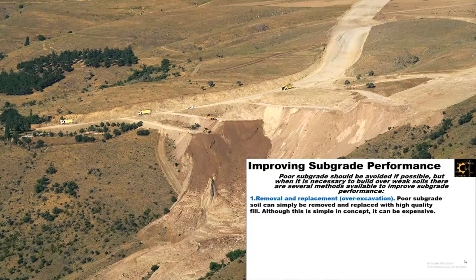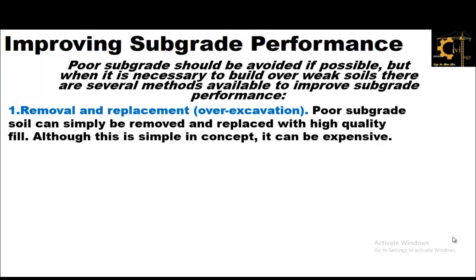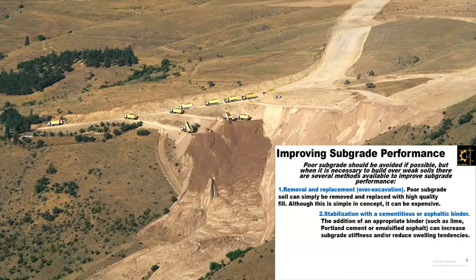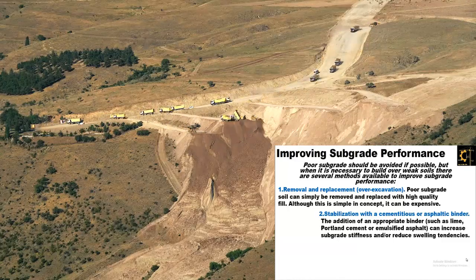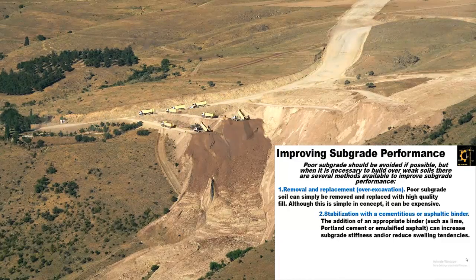Poor subgrade should be avoided if possible, but when it is necessary to build on weak soils, there are several methods available to improve subgrade performance. The first one is removal and replacement, or over-excavation. Poor subgrade soil can simply be removed and replaced with high-quality fill. Although this is simple in concept, it can be expensive. The second method is stabilization with a cementitious or asphaltic binder. The addition of an appropriate binder such as lime, Portland cement, or emulsified asphalt can increase subgrade stiffness or reduce swelling tendencies.